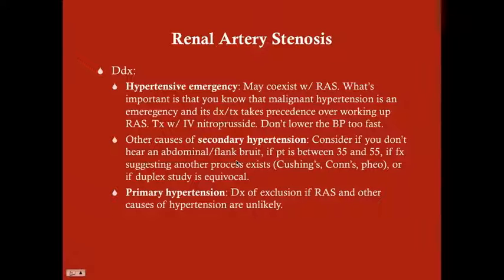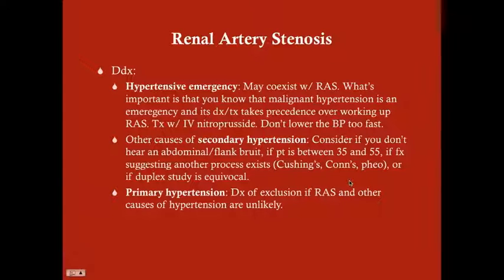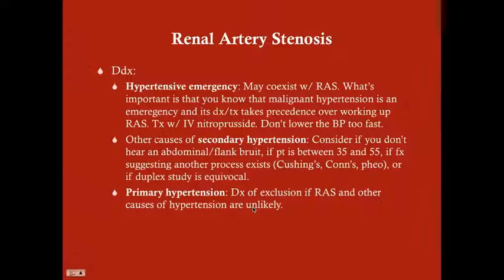Also consider other causes of secondary hypertension if there is no abdominal or flank bruit, if the patient is between 35 and 55, or if features suggesting another process are present. For example, suspect Cushing's syndrome if they have moon facies, buffalo hump, or abdominal striae; suspect pheochromocytoma if they have a very high heart rate or other symptoms of sympathetic activation. Also consider other causes if the duplex study is equivocal, with primary hypertension as the diagnosis of exclusion.